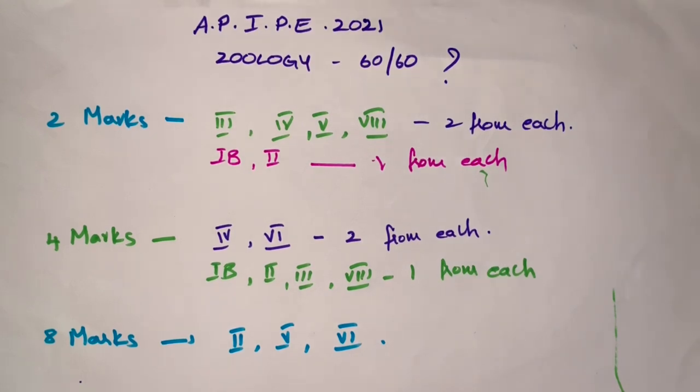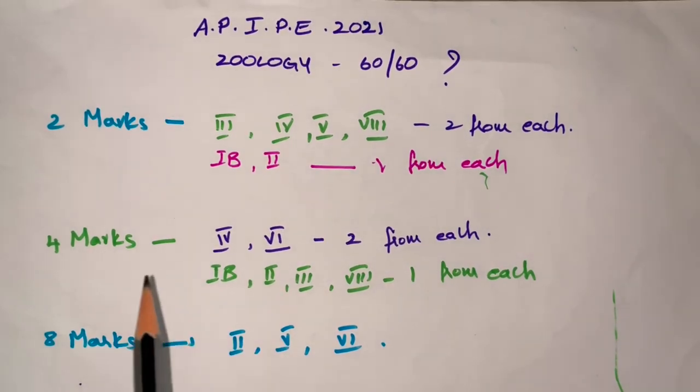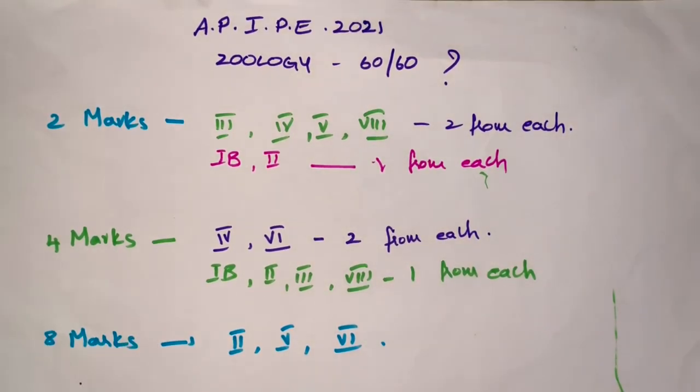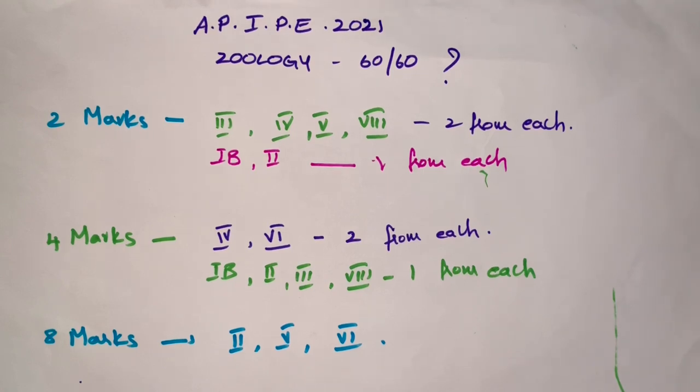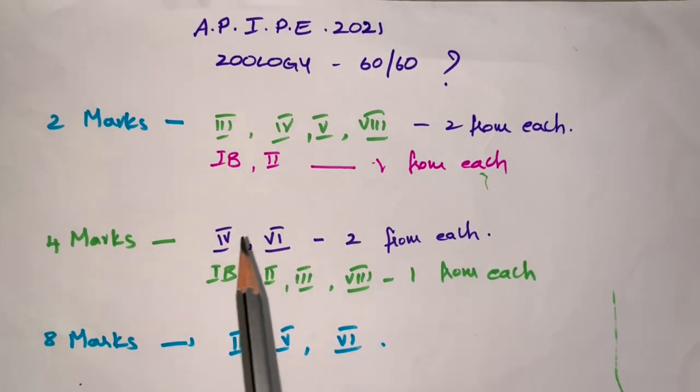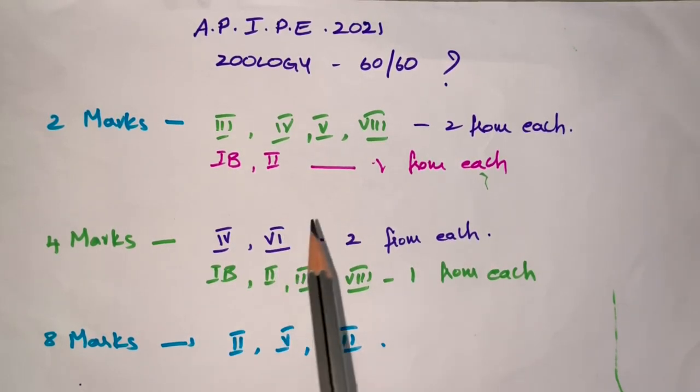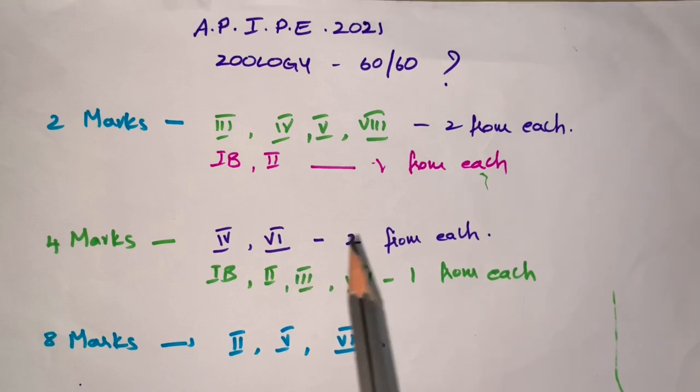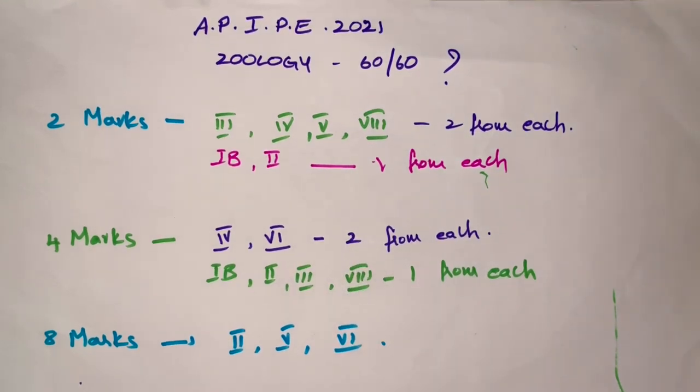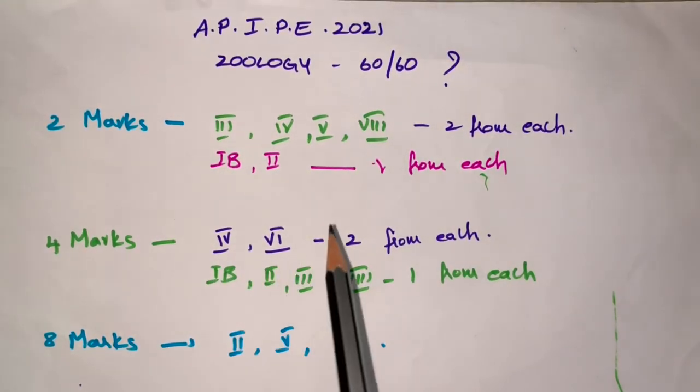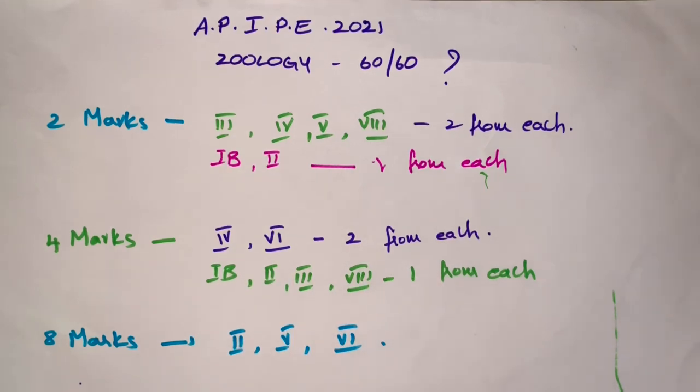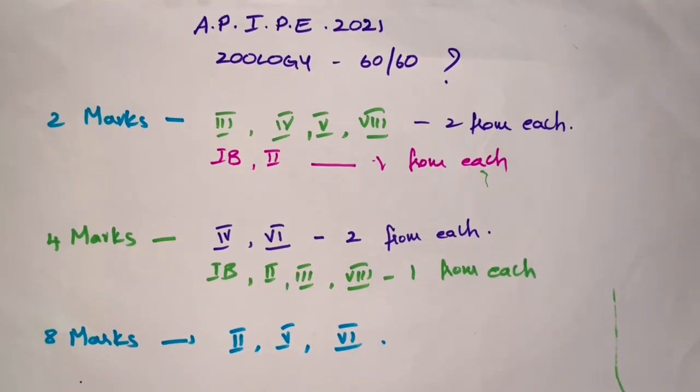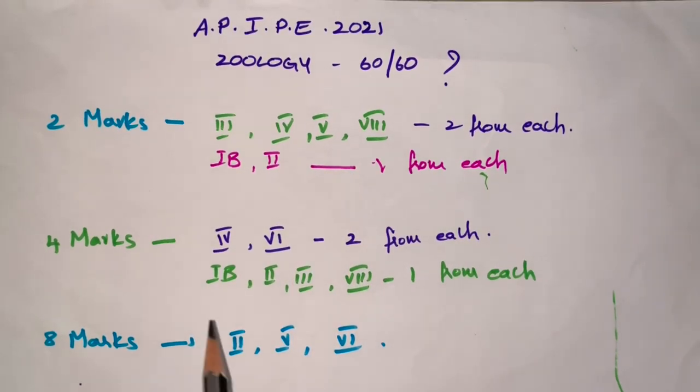Next, coming to four marks questions. You have to answer six questions out of eight questions. From chapter 4 and chapter 6, two questions will come from each chapter. So if you thoroughly read these two chapters, you can answer four four-marks questions.